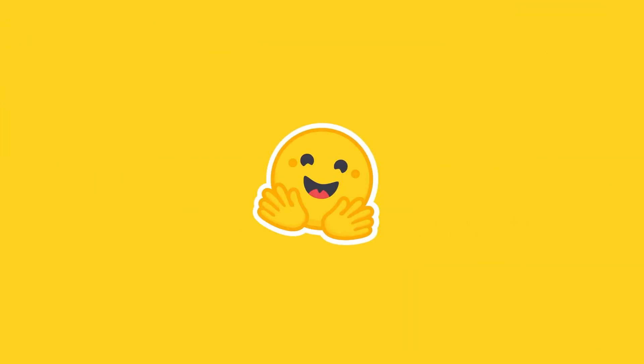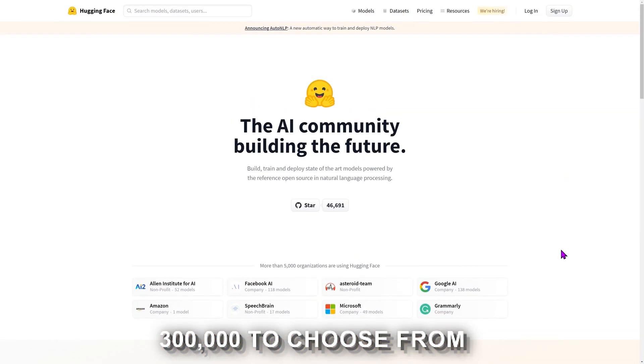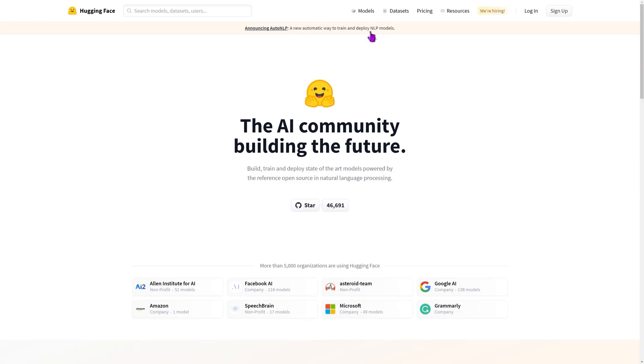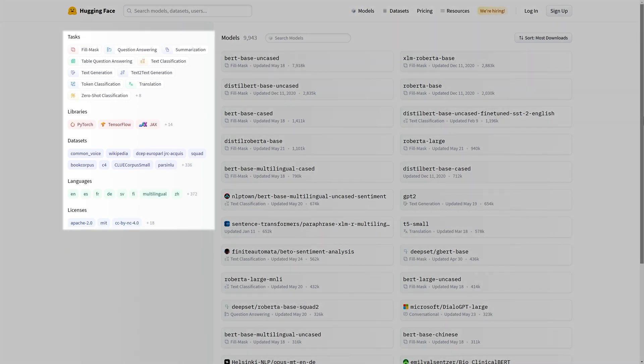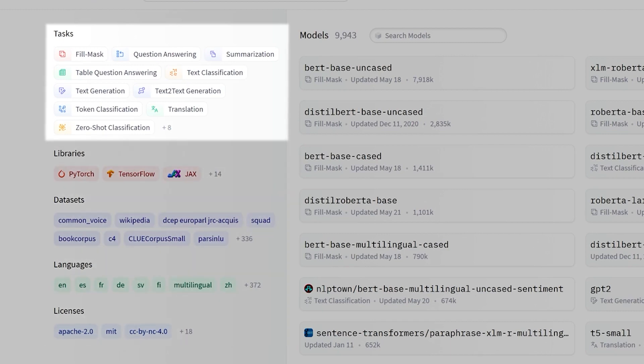HuggingFace is like a treasure trove of models, with over 300,000 to choose from. It's like having a menu of super smart AI assistants, each specializing in a different task. Imagine you need a model for translation, text generation, or even playing chess. HuggingFace has you covered.